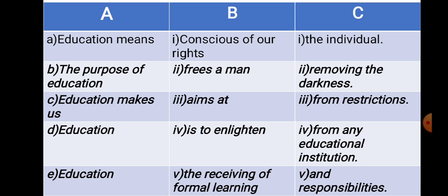Now the third one. In column A: A — education means; B — the purpose of education; C — education makes us; D — education; E — education. In column B: 1 — conscious of our rights; 2 — frees the mind; 3 — aims at; 4 — is to enlighten; 5 — the receiving of formal learning. In column C: 1 — the individual; 2 — removing the darkness; 3 — from restrictions; 4 — from any educational institution; 5 — and responsibilities.